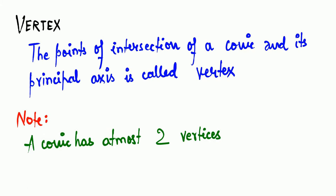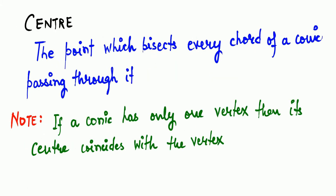What is the center? The point which bisects every chord of a conic passing through it is called the center. An important note: if a conic has only one vertex, then its center coincides with the vertex — the center and vertex are exactly the same point.